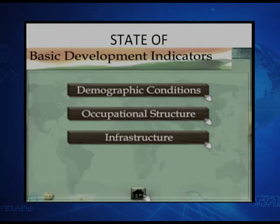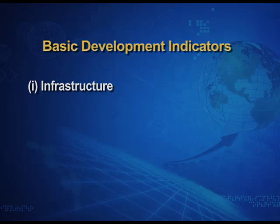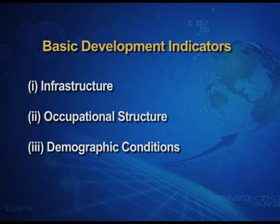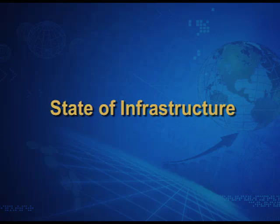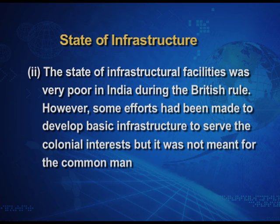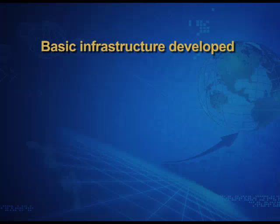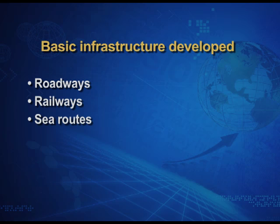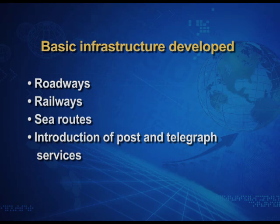Now let's talk about the state of development indicators like infrastructure, occupational structure, and demographic conditions. Infrastructural facilities were very poor in India during British rule. However, some efforts had been made to develop basic infrastructure to serve colonial interests, but it was not meant for the common man. Basic infrastructure developed included roadways, railways, sea routes, and most importantly, the introduction of post and telegraph services.